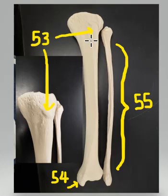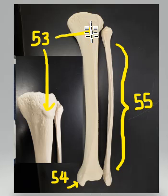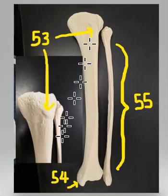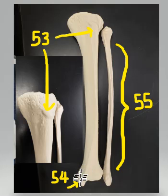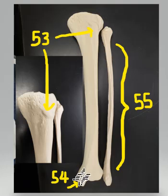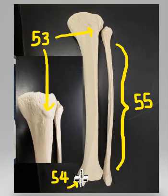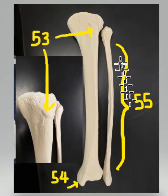What is the name of this feature where the quadriceps tendon inserts? Number 54 is a little process that extends downward on the distal end of the tibia. It actually creates the medial ankle, if you think about that.